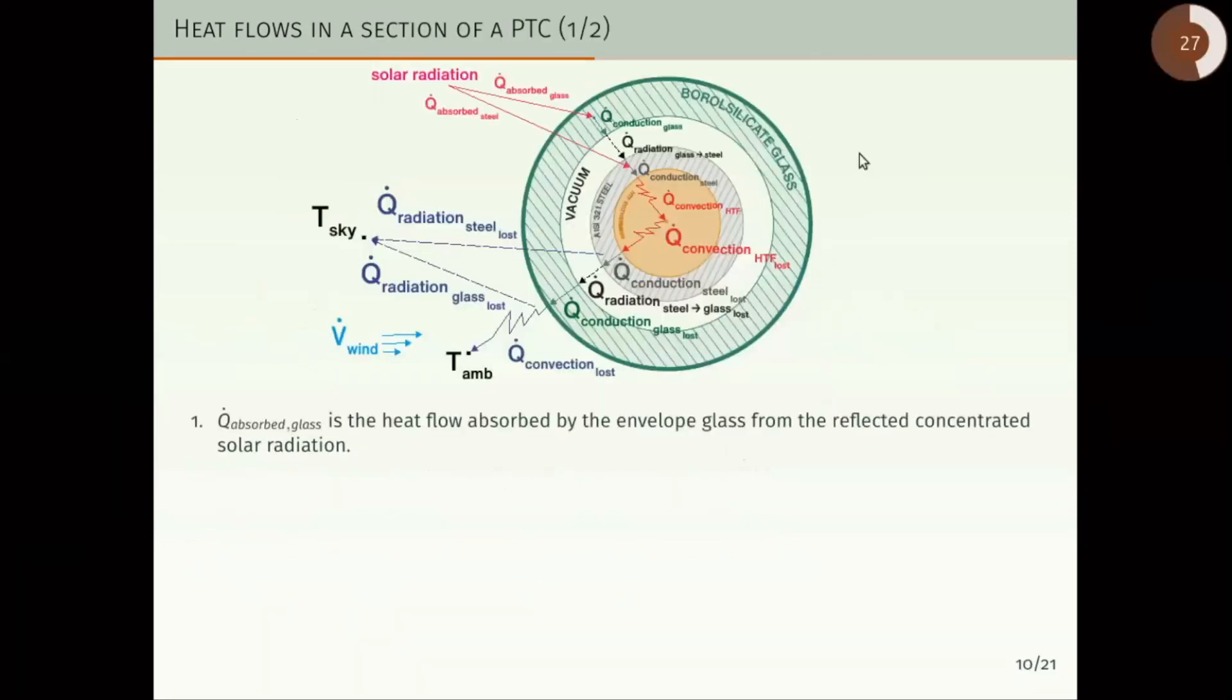In this slide we present the section that we have used to analyze the model, and all the flows that we have considered for the model development are represented. The first one is the Q absorbed glass, that is the heat flow absorbed by the envelope glass from the reflected concentrated solar radiation.